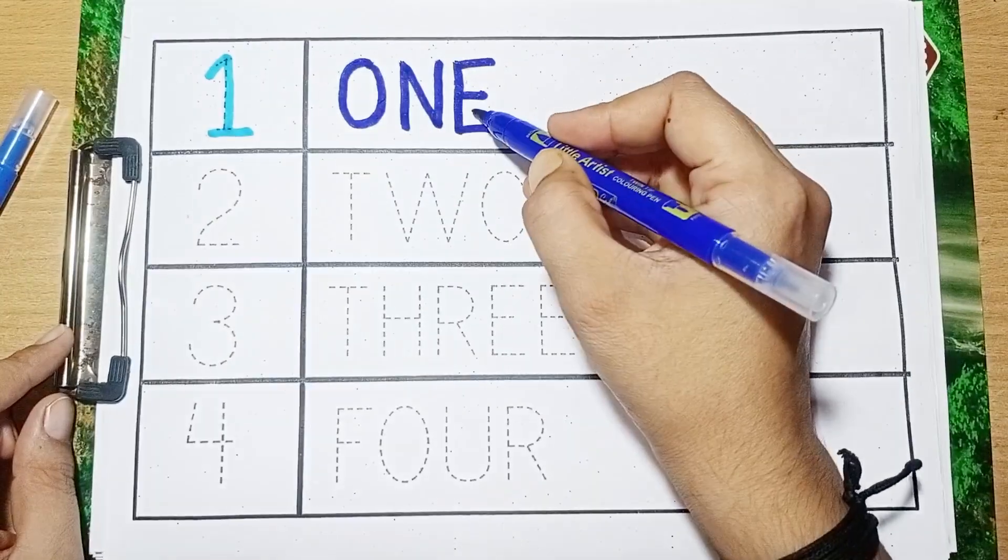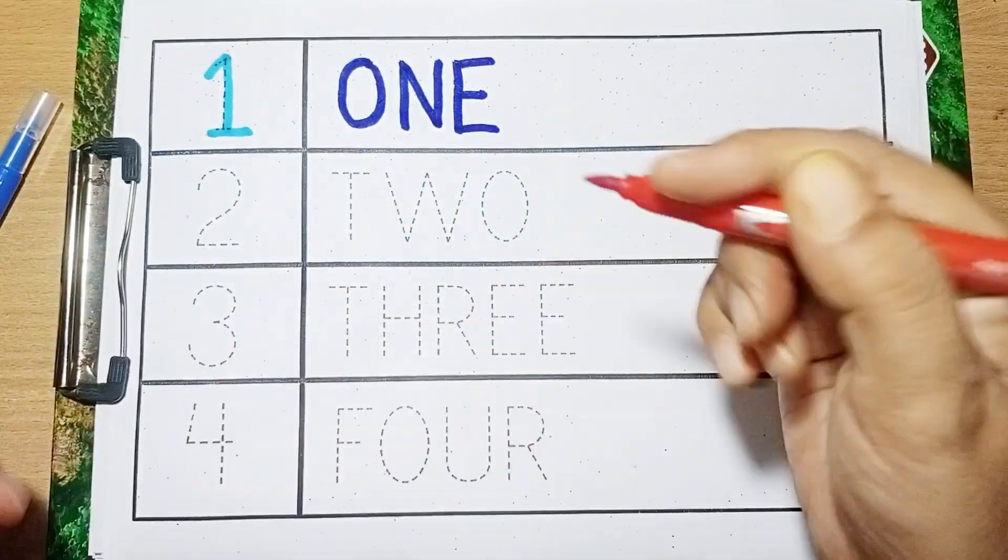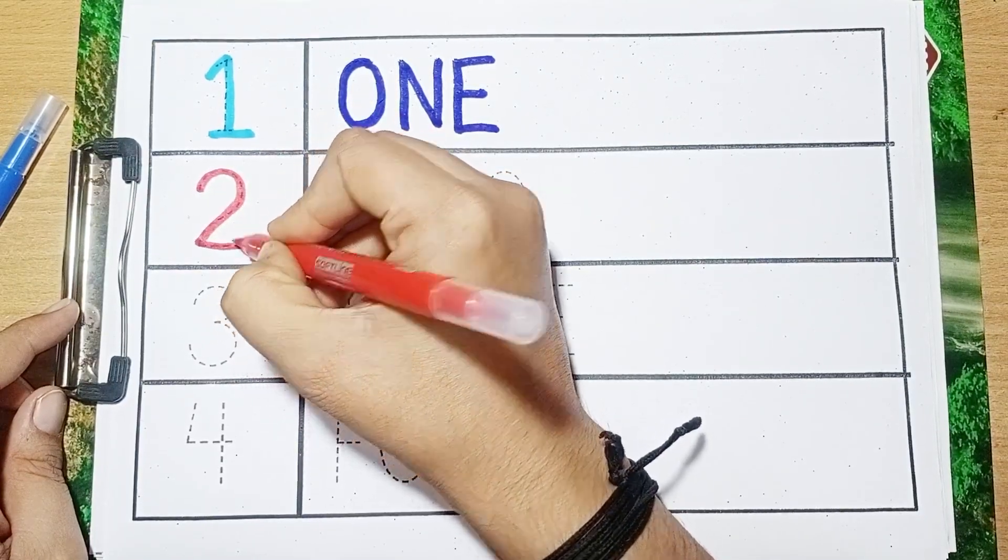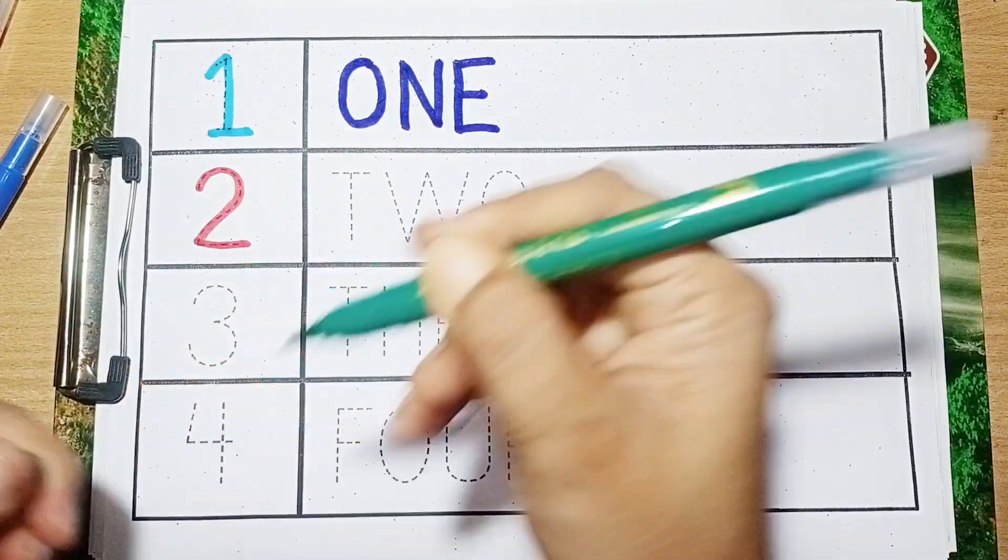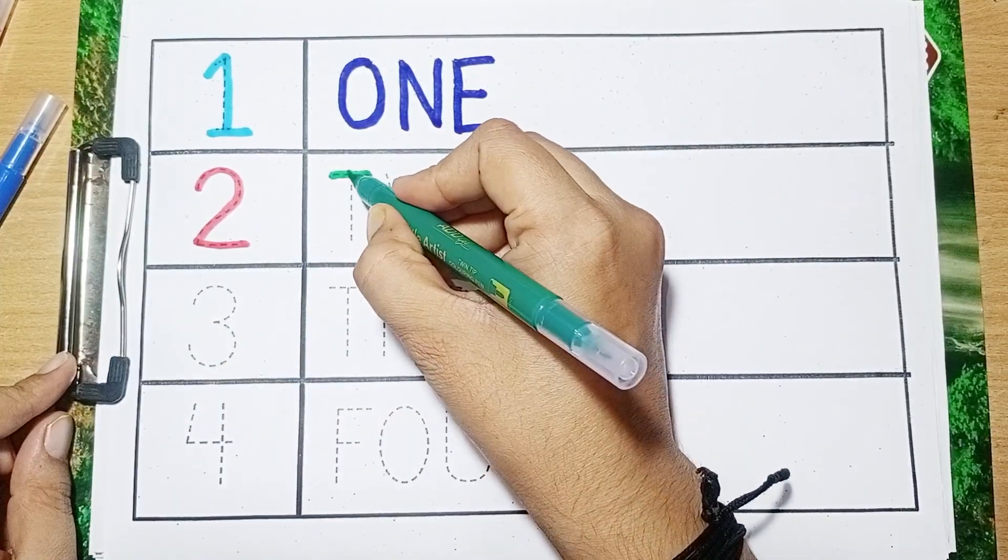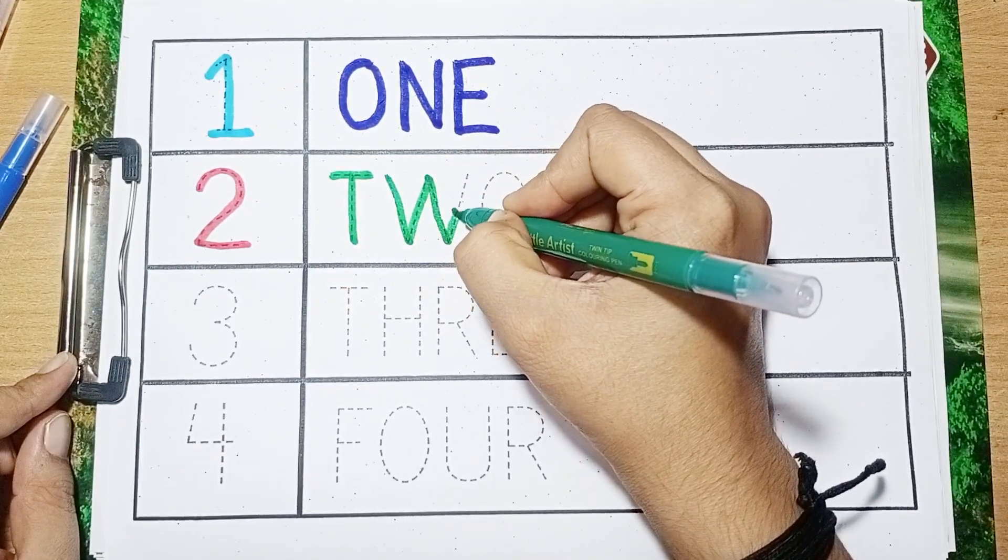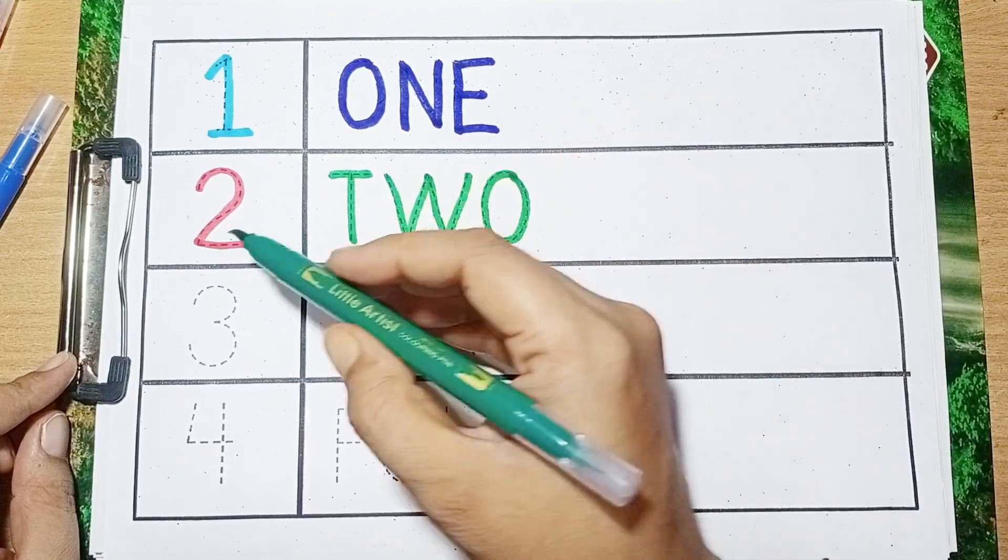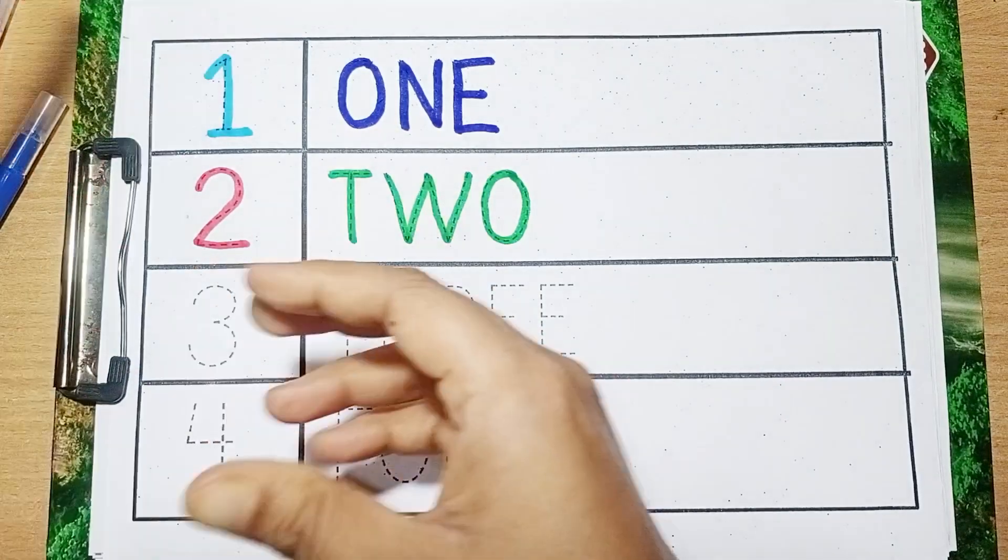One, O-N-E, one. Two, two, two. T-W-O, two. T-W-O, two.